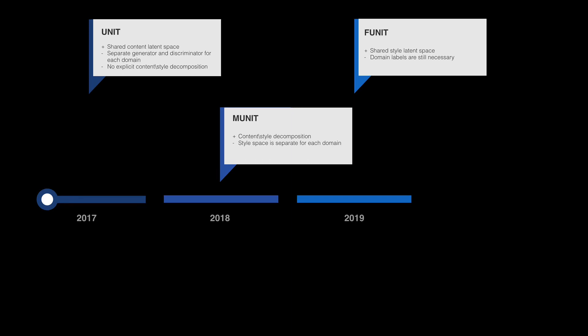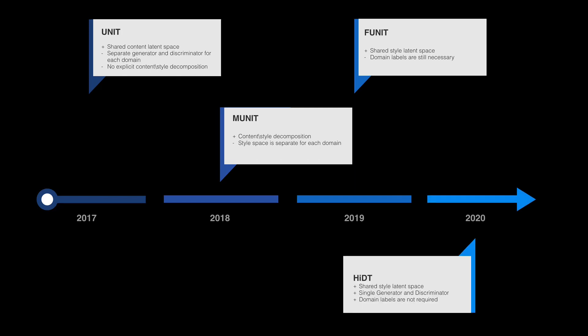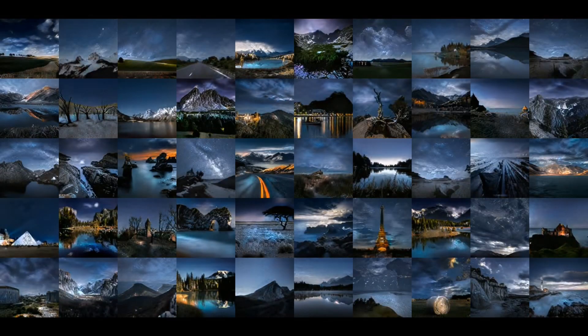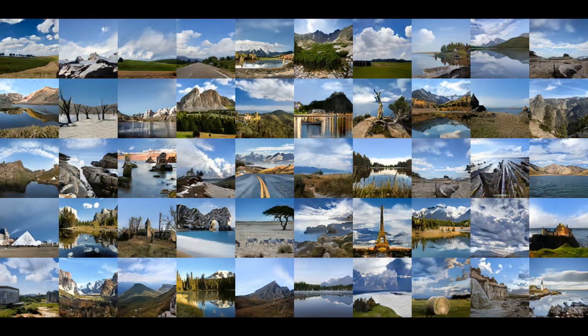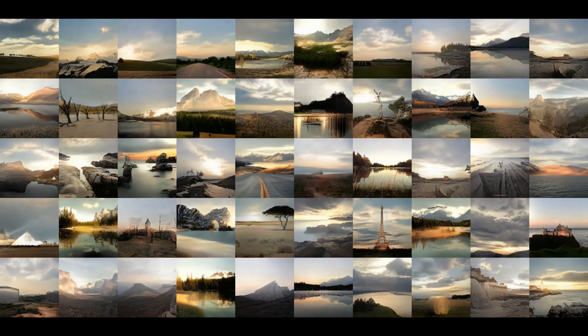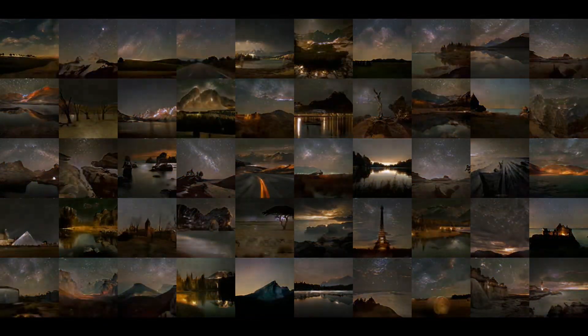The few-shot unsupervised image-to-image translation framework aims at learning a translation model for mapping an image of a source class to an analogous image of a target class, by leveraging few images of the target class given at test time. The proposed high-resolution daytime translation model will be explained further. We show that by learning only from still images without any temporal information, our network is capable of producing smooth daytime transitions.